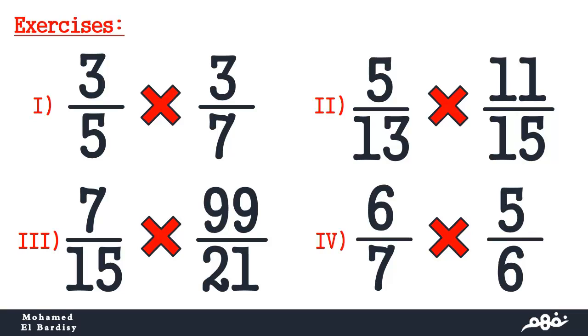We will take one of them to solve with you, and the others you have to do by yourself. You have 3 over 5 times 3 over 7. It doesn't matter which is greater.